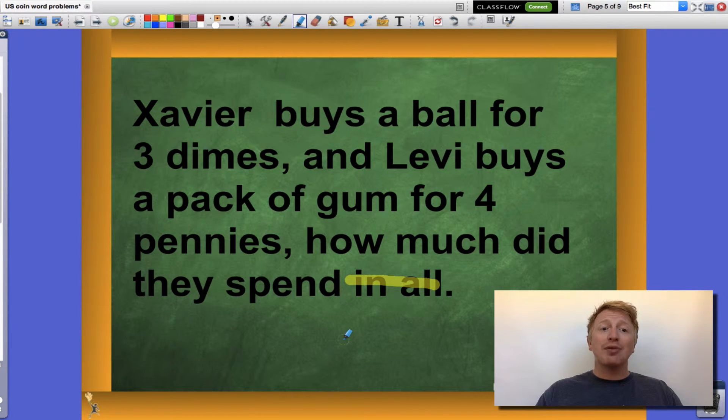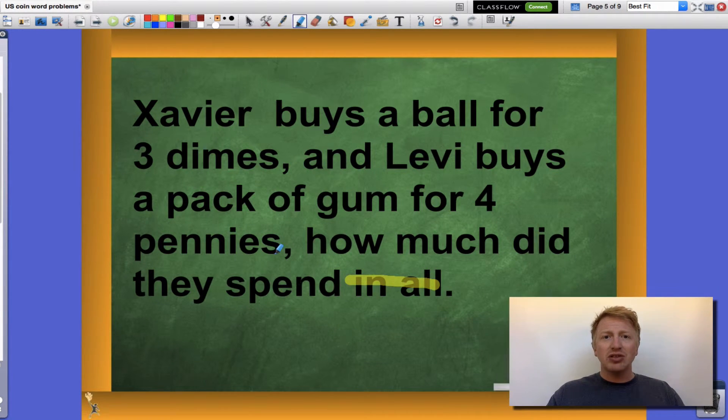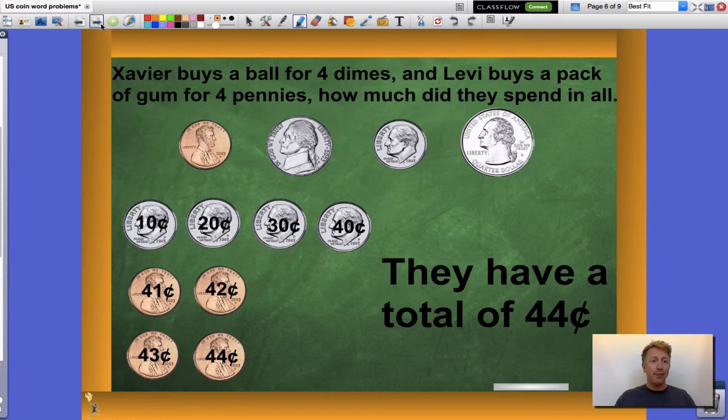Let's see what that looks like when we add those together. Xavier had four dimes. At ten cents a piece, I have ten, twenty, thirty, and forty. Now if I add those to Levi's four pennies, I have forty-one cents, forty-two cents, forty-three cents, and forty-four cents. Xavier and Levi, altogether, spent forty-four cents.